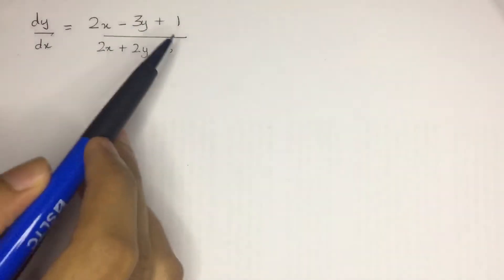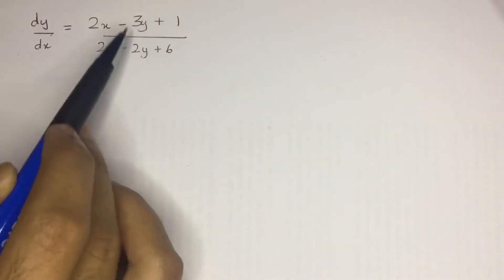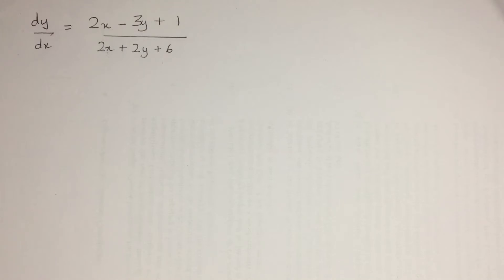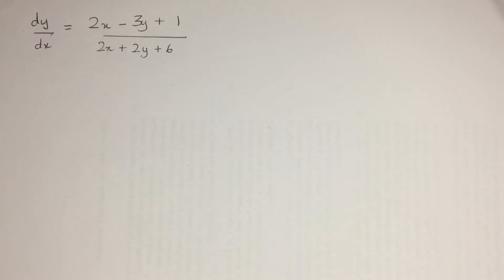However, there is a constraint — there are two constants in these two parts, so we can't use the homogeneous type method directly. What we are going to do is use a substitution first, and after that use the homogeneous type method. This overall method is known as reduction to homogeneous type. It's similar to the homogeneous method, but first we apply a simple substitution to obtain a homogeneous type equation, and then solve using the previous methods.